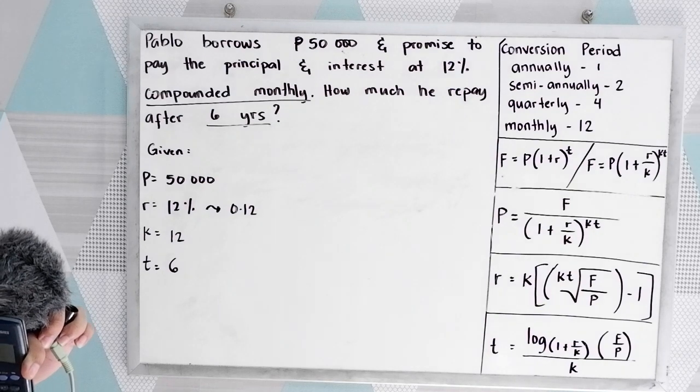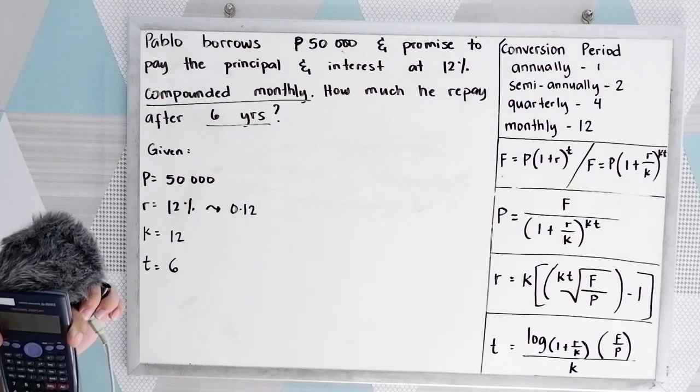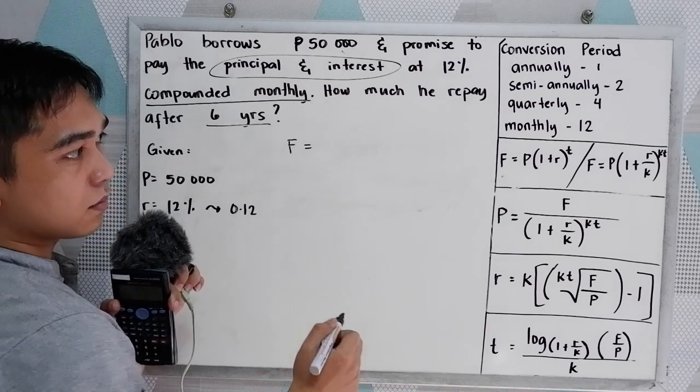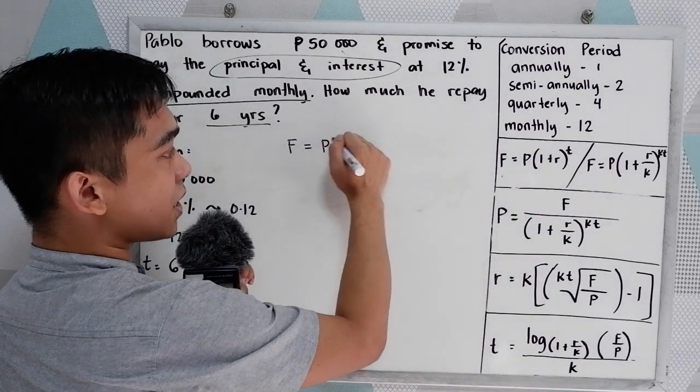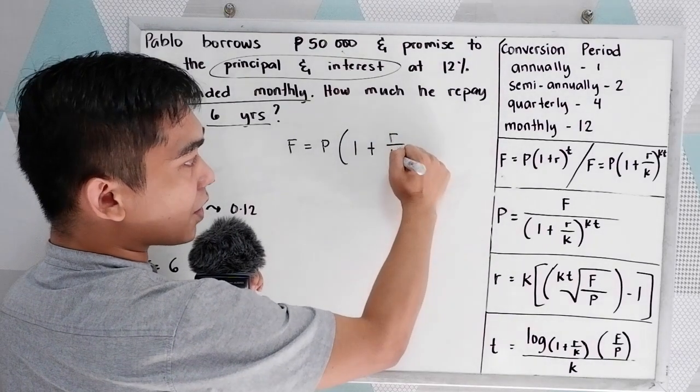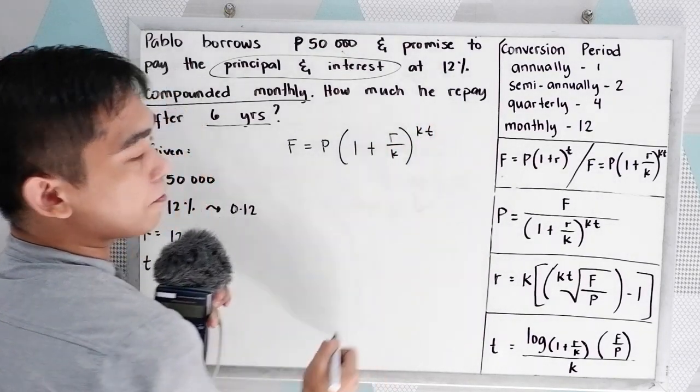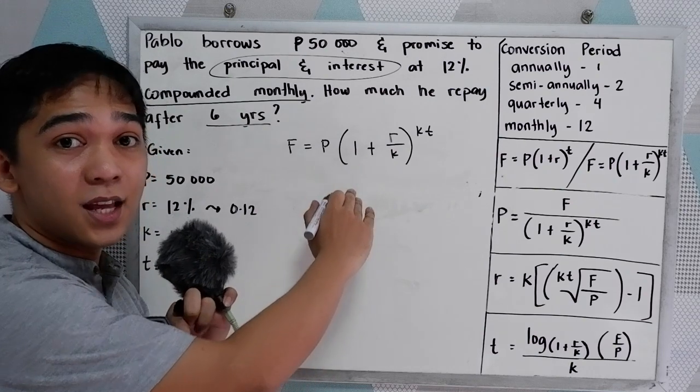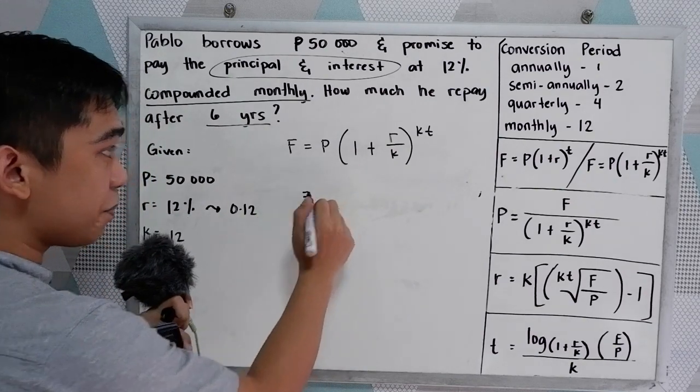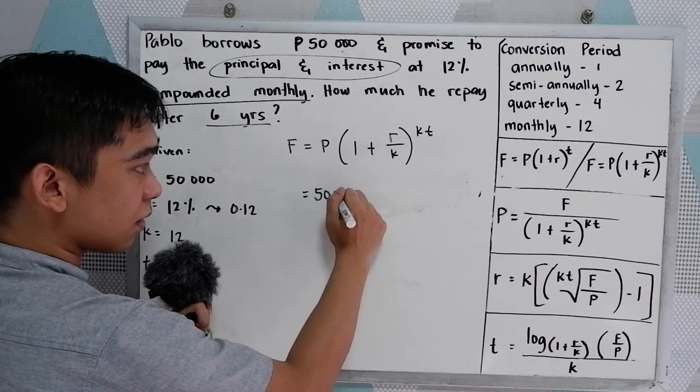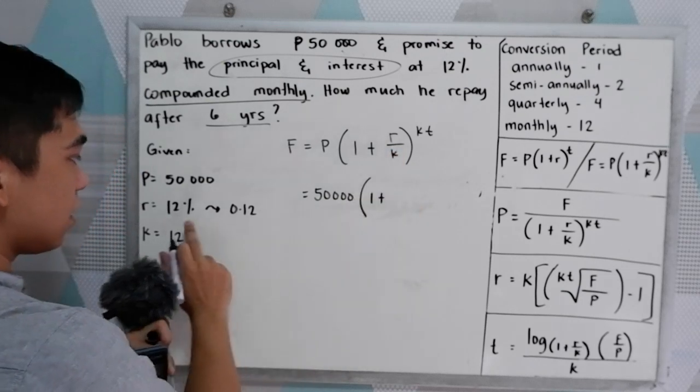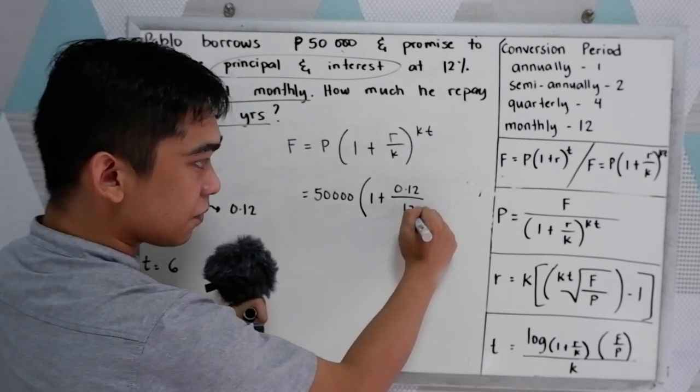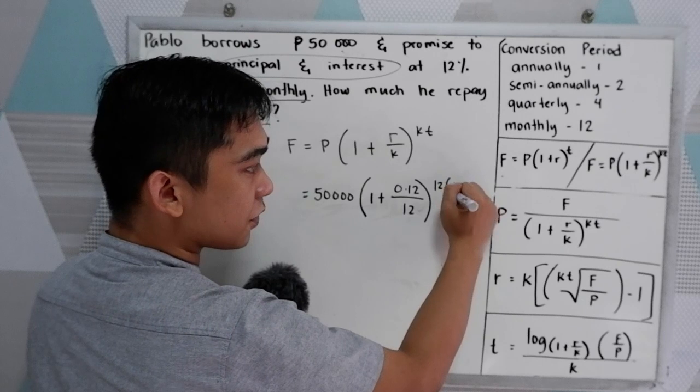We are going to find the future value. Future value, the principal, and the interest. So future value, that is equal to P, quantity, one plus R over K, raised to K times T. Now, let us substitute. Using our formula, let us substitute the given. So our P is 50,000, times 1, plus our R, 0.12, all over our K is 12, raised to 12 times 6.